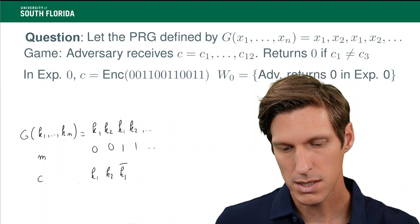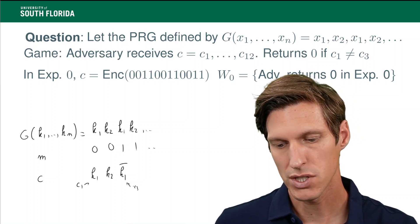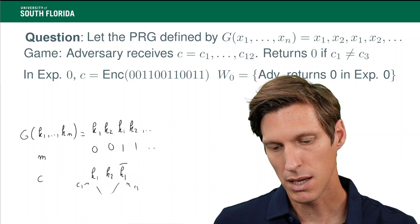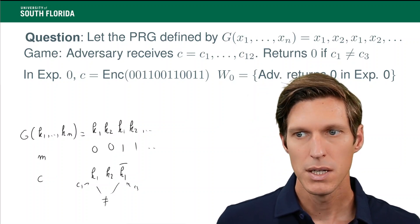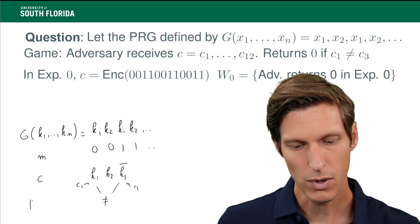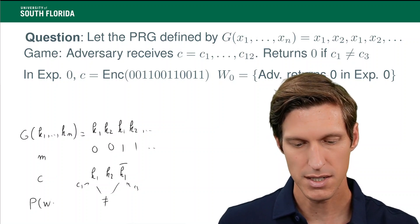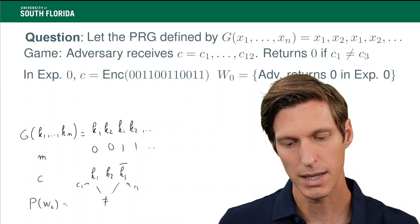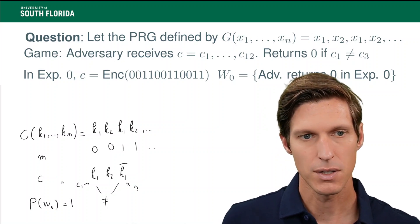So what that means is c1, which is the first bit, and c3, which is the third bit, they are always different. So the probability that the adversary returns 0 in that experiment is 1.